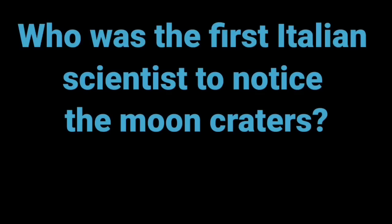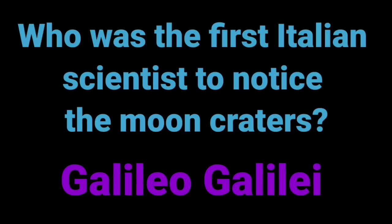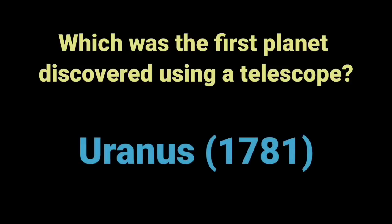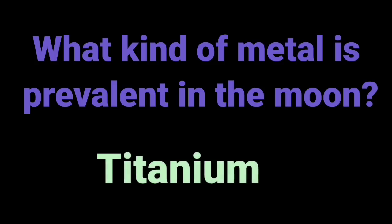Who was the first Italian scientist to notice the moon craters? Galileo Galilei. Which was the first planet discovered using a telescope? Uranus, 1781. What kind of metal is prevalent on the moon? Titanium.